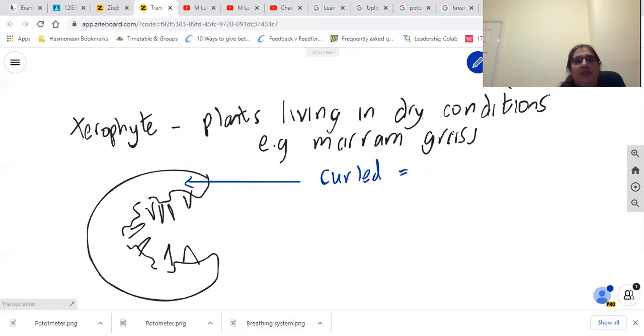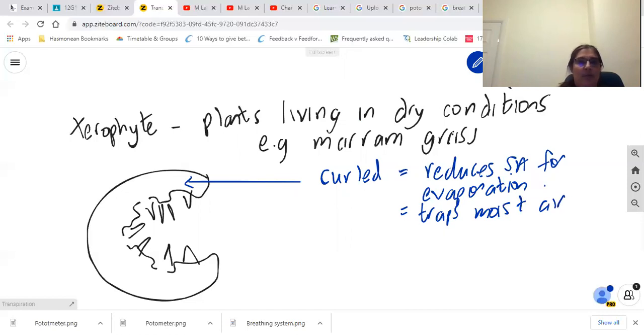There are a few things for us to notice here. It's curled for a couple of reasons. It's curled because it reduces its surface area for evaporation. It also traps moist air, and we'll come back to that one in a minute.